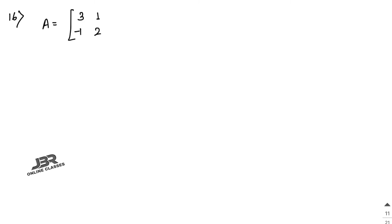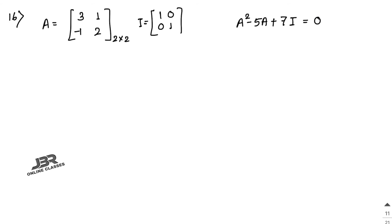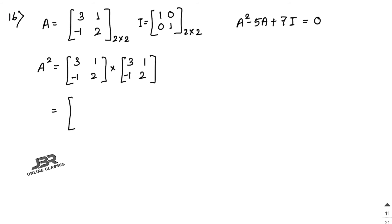Sum number 16: matrix A = [3, 1; -1, 2]. Show that A² − 5A + 7I = 0. The identity matrix I is 2×2. First find A²: multiply A with itself. 3×3 + 1×(−1) = 8, 3×1 + 1×2 = 5, (−1)×3 + 2×(−1) = −5, (−1)×1 + 2×2 = 3. So A² = [8, 5; -5, 3].